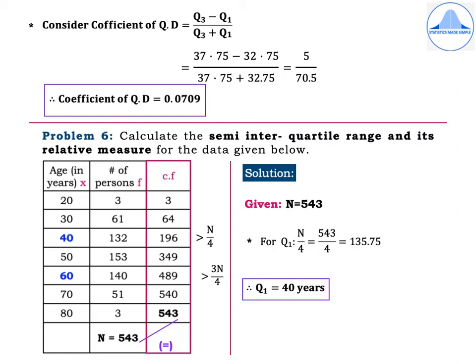Problem 6. Calculate the semi-interquartile range and its relative measure for the data given below. Age in years: 20, 30, 40, 50, 60, 70, 80 and number of persons: 3, 61, 132, 153, 140, 51, 3. Mark age as X and number of persons as F, then find N which equals 543.